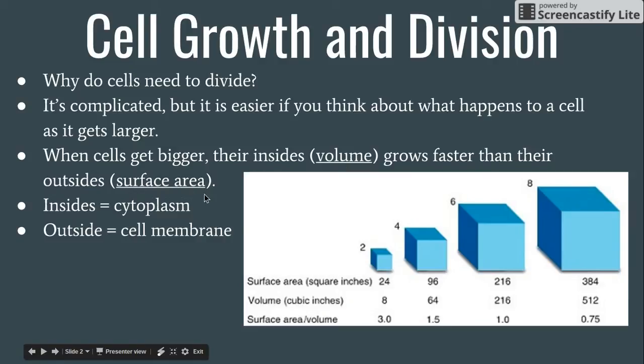What we'll see in the activity is why this is a problem. This is the answer to our question of why do cells need to divide. Eventually, the volume gets far larger than the surface area, and this begins to create problems for cells.